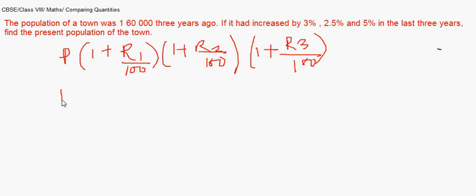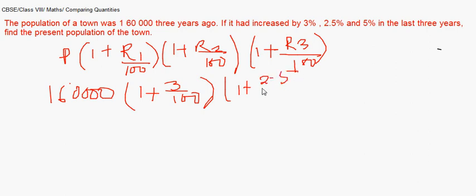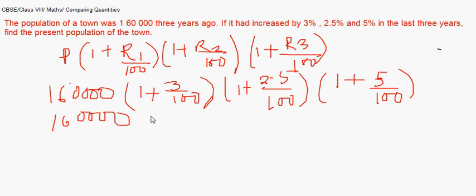So our formula will be 1,60,000 times (1 + 3/100) times (1 + 2.5/100) times (1 + 5/100). The rest is simple arithmetic where you solve the brackets and find the answer. This becomes 1,60,000 times 103/100 times 102.5/100, which can be reduced, and the last one can also be reduced.